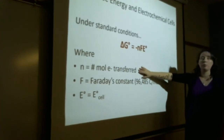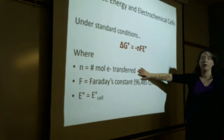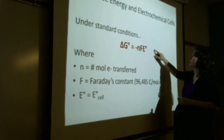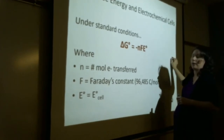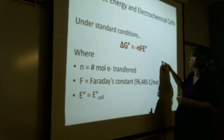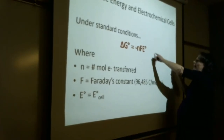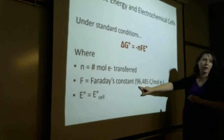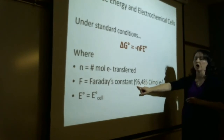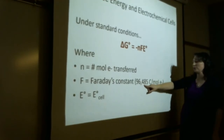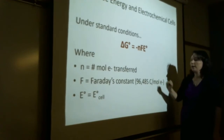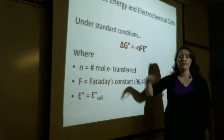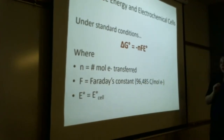N is the number of moles of electrons transferred — that's the number you cancel out from the half reactions. F is Faraday's constant, 96,485 coulombs per mole. And E°cell is what we learned to calculate on Monday. That's why we need our standard reduction potentials handy.